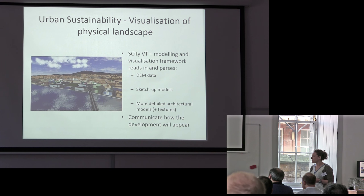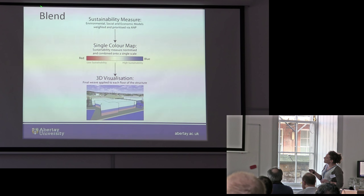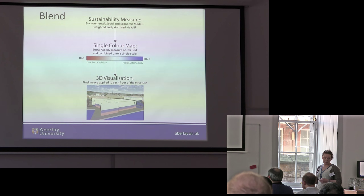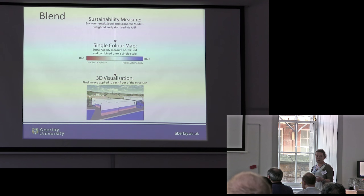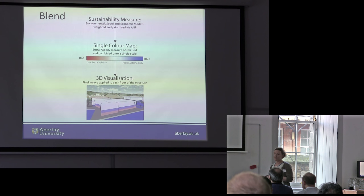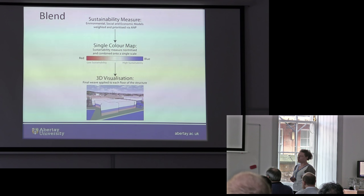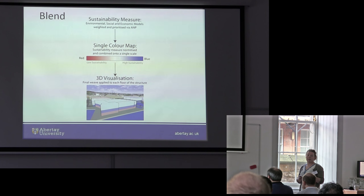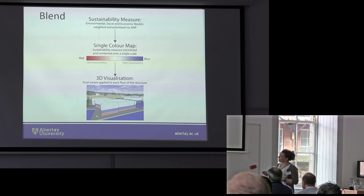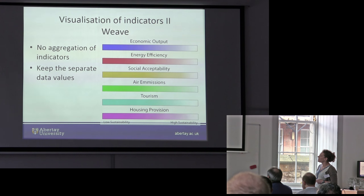What's more interesting is overlaying the sustainability information on the 3D model. Using ANP, you get one measure of sustainability, map that to a colour scale, and overlay it onto the built environment. With a split screen comparing two different scenarios, you immediately get a visual representation of sustainability. In this case, different floors have different uses — whether commercial, residential, or retail — and we conducted a survey to find out what inhabitants of Dundee thought the most acceptable use was. The model also runs over time, reflecting changes in energy usage.